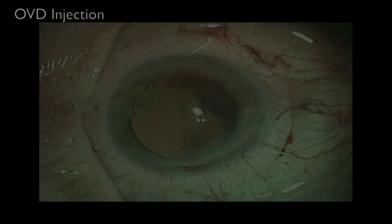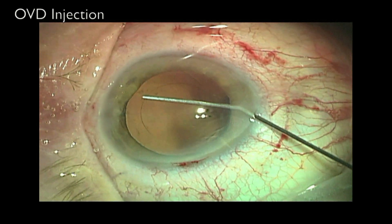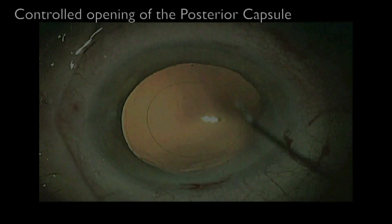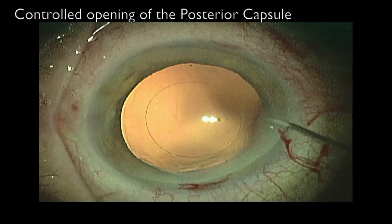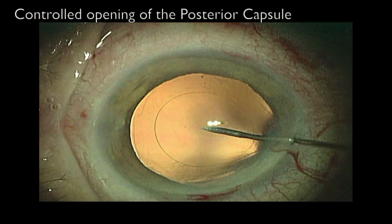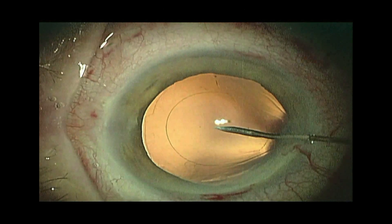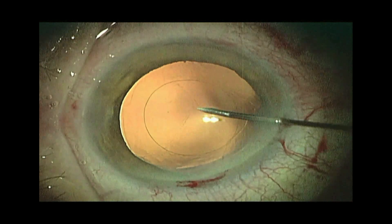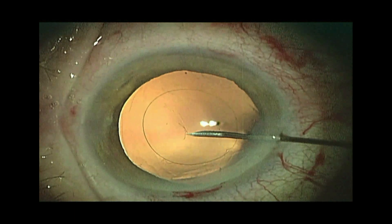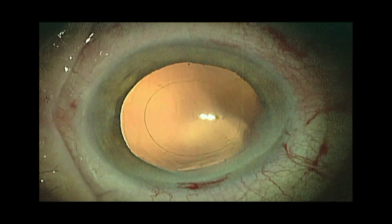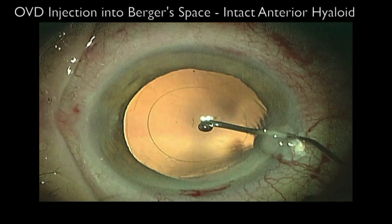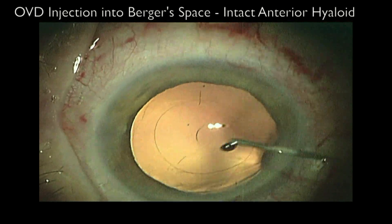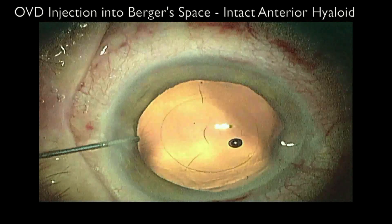After filling the bag with OVD, a controlled opening is created in the posterior capsule with a cystitone. OVD is then injected into Berger's space to raise the posterior capsule away from the anterior hyaloid face. OVD is also injected into the anterior chamber to reform it.